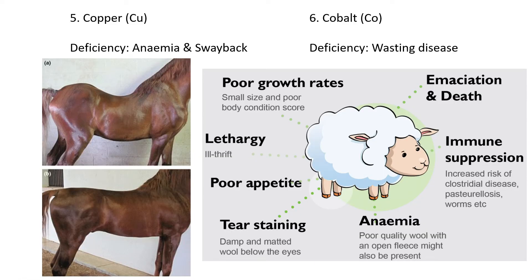Fifth is copper. If there's a copper deficiency, it can cause anemia and specifically sway back. This horse at the bottom has a normally horizontal back — you can ride it fine. But in the top picture, you can literally see how the entire back has sagged. It's like the spine has not completely formed, or it's malformed, and there is absolutely no muscle mass there at the spine. That is what is called sway back.